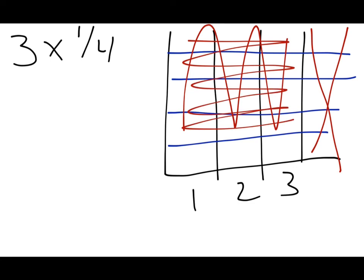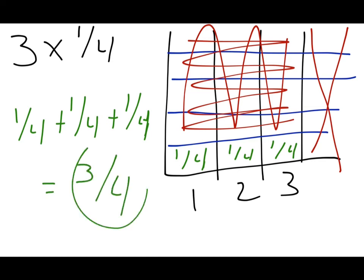So now I have 1 fourth, 1 fourth, and 1 fourth. I have them all together. 1 fourth plus 1 fourth plus 1 fourth. That equals 3 fourths. And that is how you multiply a whole number and a fraction using an area model.